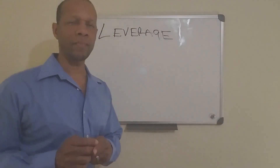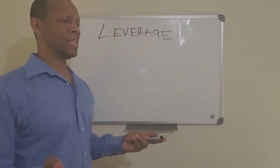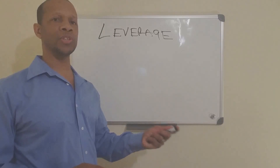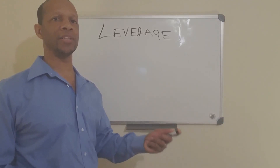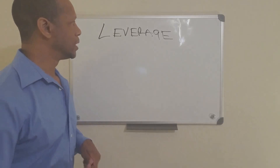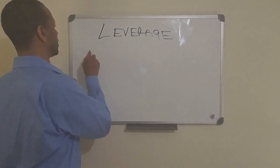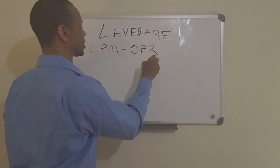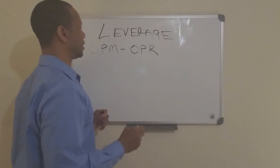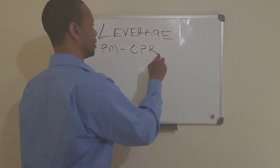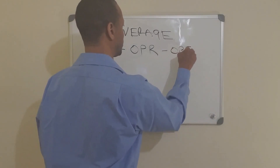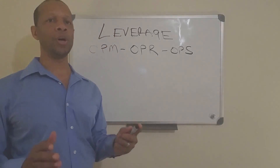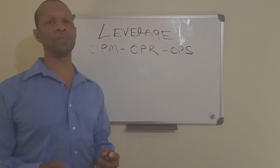Leverage is pretty much cooperation — using other resources to help you achieve a goal. Somebody else's sources. OPM: other people's money. OPR: other people's resources. OPS: other people's skills. In other words, using other people or other resources to help you achieve a goal.